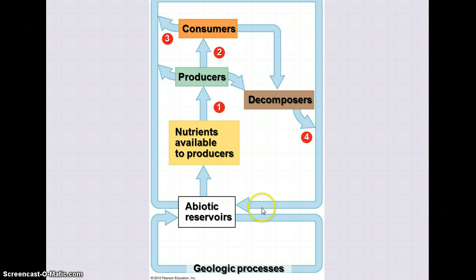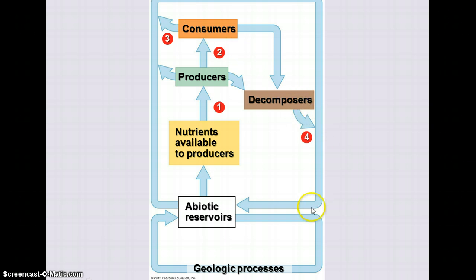All of these involve geologic processes and abiotic reservoirs that make nutrients available to producers. The producers can then pass them on to consumers, to the atmosphere, and via decomposers back to the soil and abiotic reservoirs. We're going to see all of these factors included in the various cycles we're discussing today.